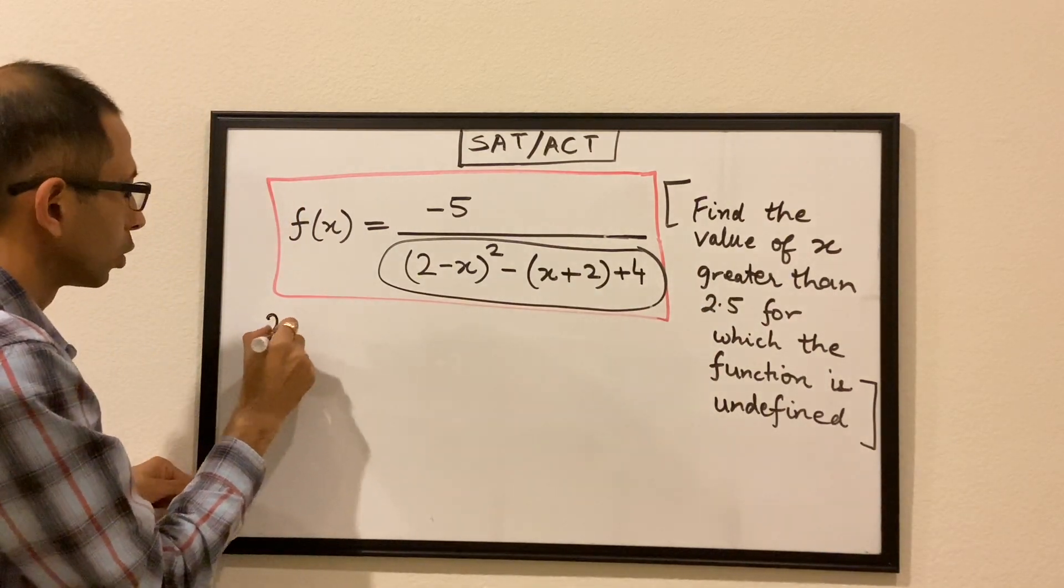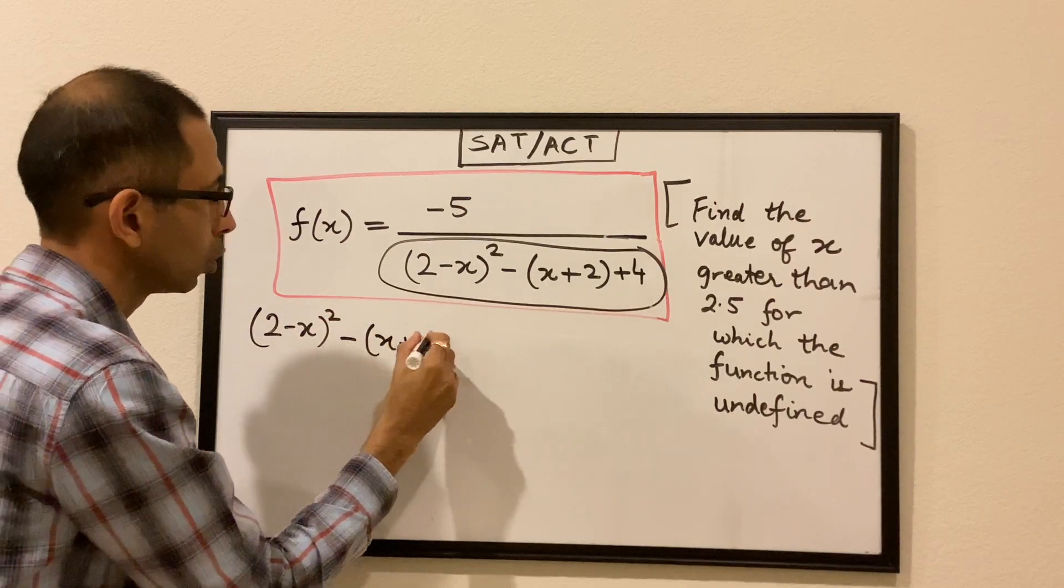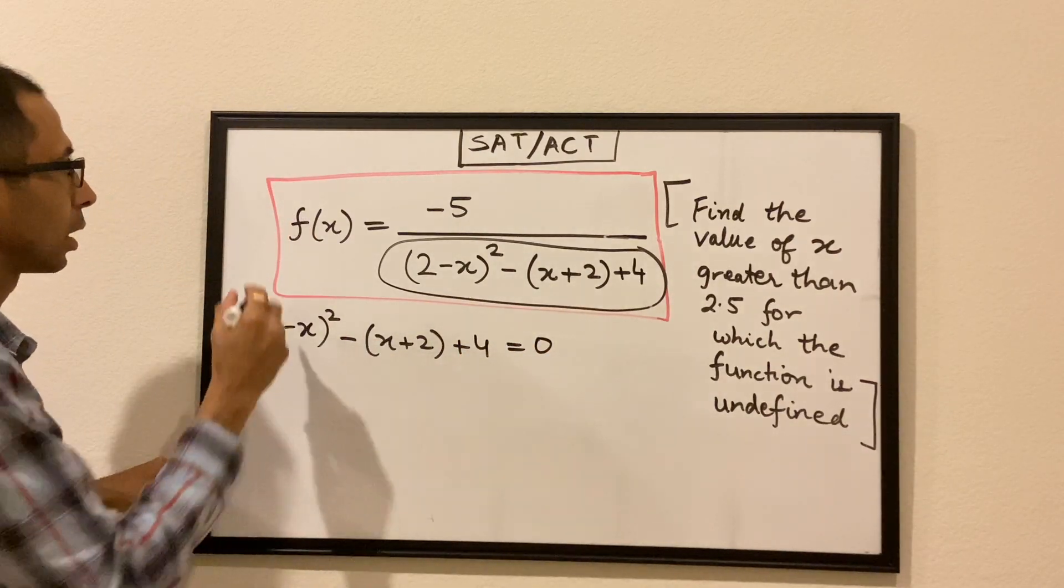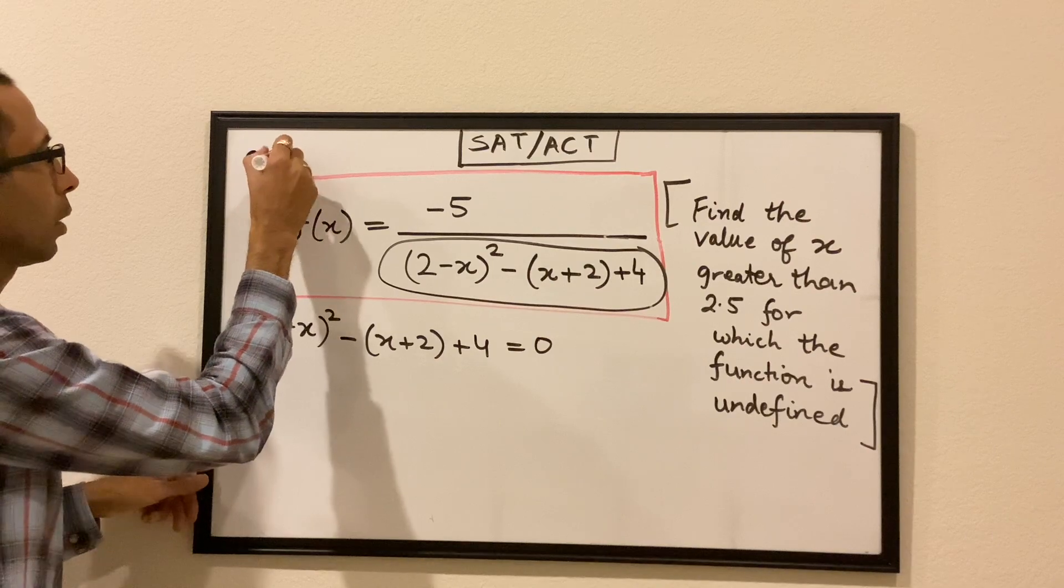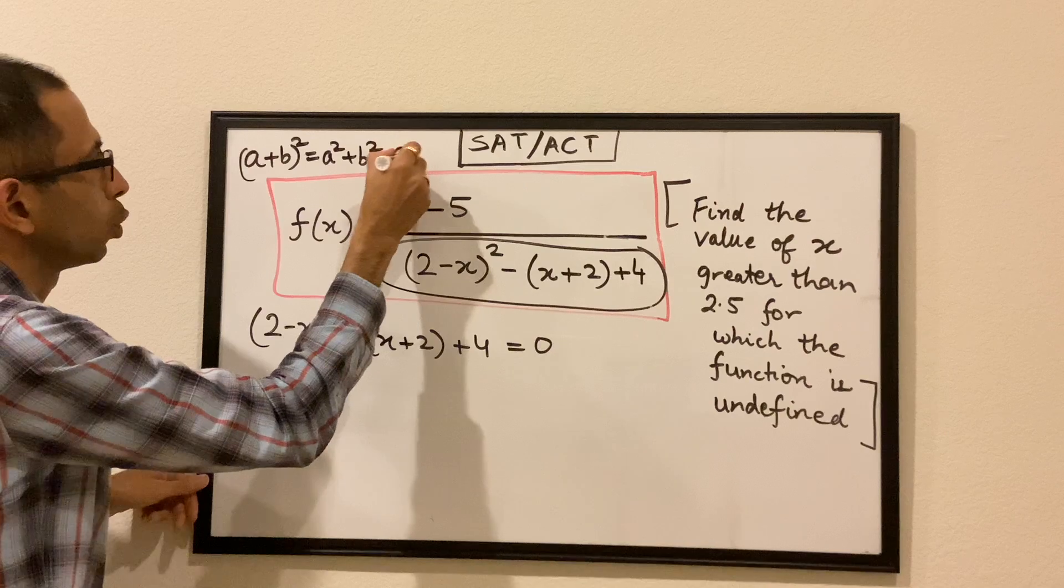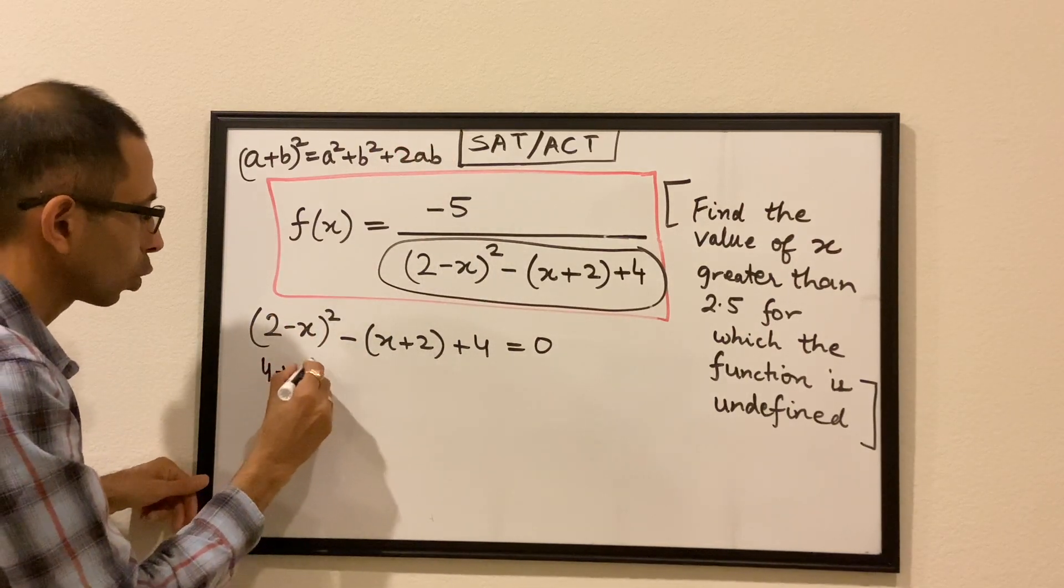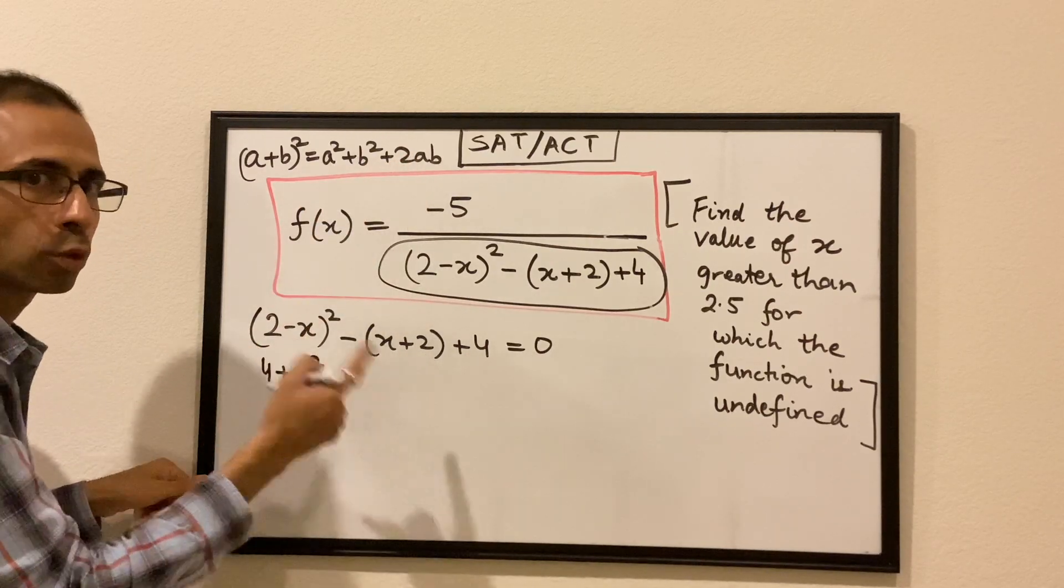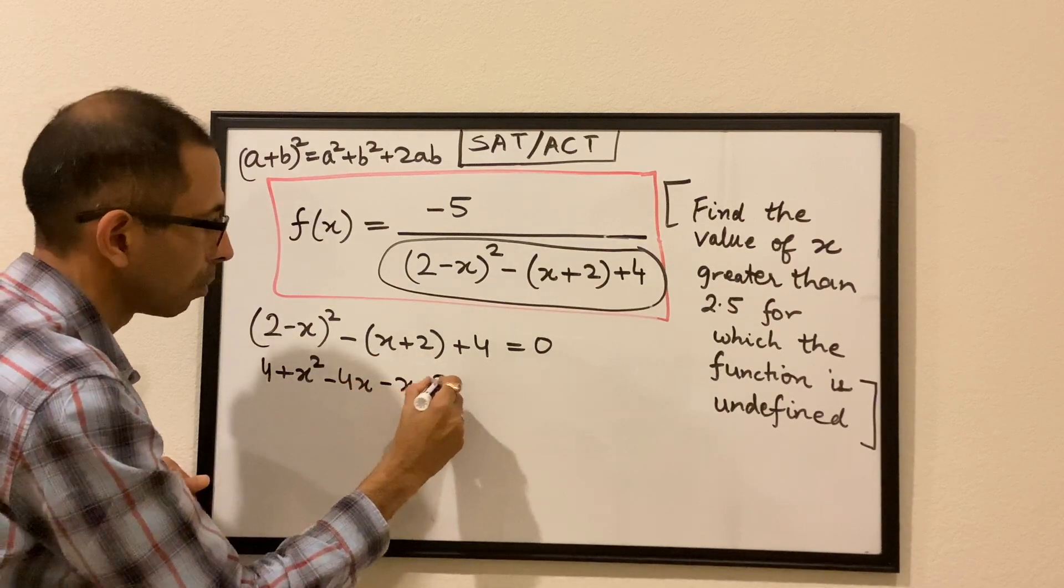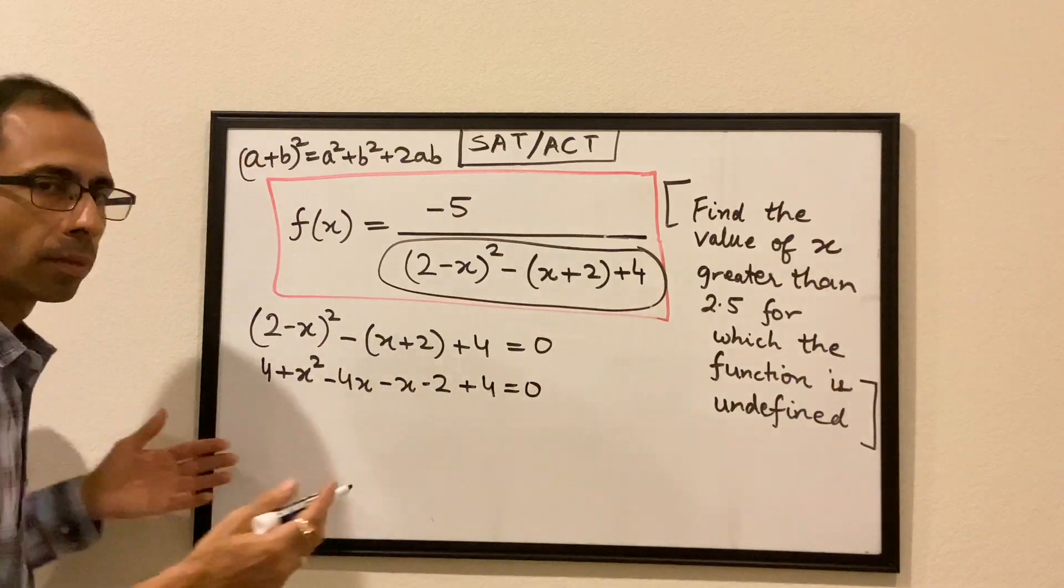So (2 minus x) whole square minus (x plus 2) plus 4 is equal to 0. We expand this using (a plus b) whole square: a square plus b square plus 2ab, right? So we expand this, so we get 4 plus x square plus 2ab. Now b is negative, so it becomes minus 4x. We expand this, so it gets minus x minus 2 plus 4 is equal to 0.